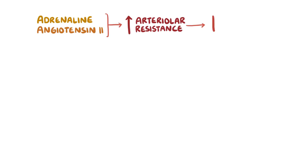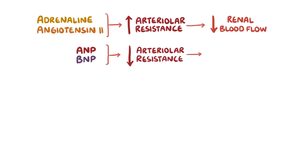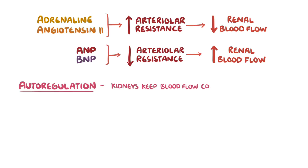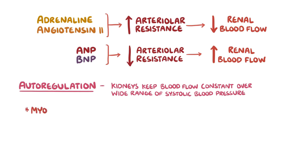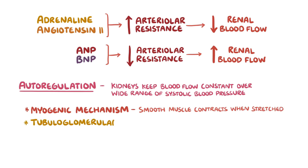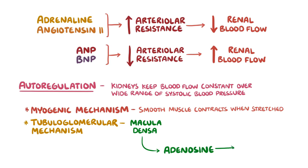As a quick recap: adrenaline and angiotensin 2 increase arteriolar resistance and decrease renal blood flow, whereas atrial and brain natriuretic peptides decrease arteriolar resistance and increase renal blood flow. In autoregulation, the kidneys keep blood flow constant over a wide range of systolic blood pressures. There's the myogenic mechanism — where smooth muscle cells contract when stretched — and the tubuloglomerular mechanism, where macula densa cells secrete adenosine, which has a paracrine effect on the afferent arteriole causing vasoconstriction.